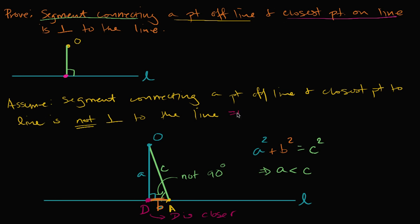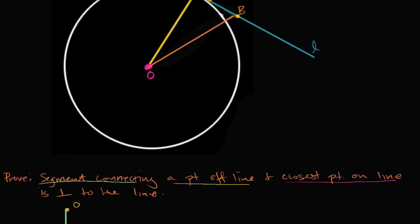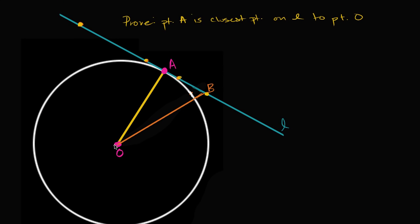This leads to a contradiction, because you can always find a closer point if the segment is not perpendicular. Therefore, the segment connecting a point off the line to the closest point on the line must be perpendicular to the line. And just like that, we can feel confident that if you have a radius meeting a tangent line at the point of tangency, that forms a 90-degree angle.